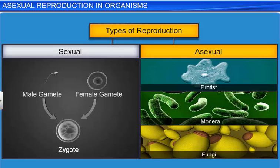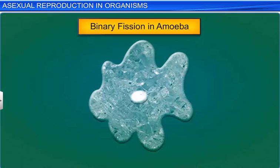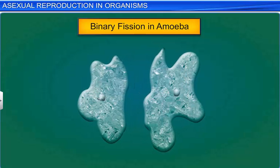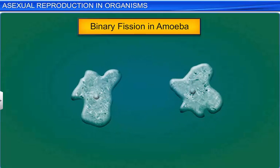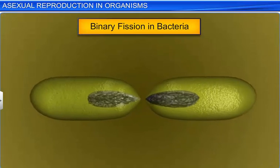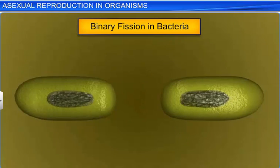Asexual reproduction, commonly seen in protists, monera, and fungi, is of many different types. The amoeba, for instance, reproduces by binary fission, where the parent cell divides into two halves and each half develops into a daughter cell. Likewise, bacteria too reproduce through binary fission.